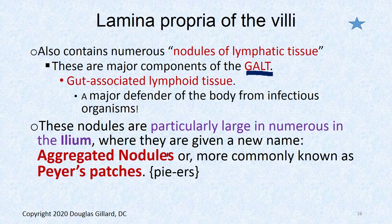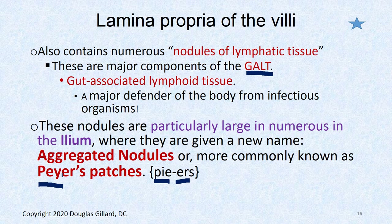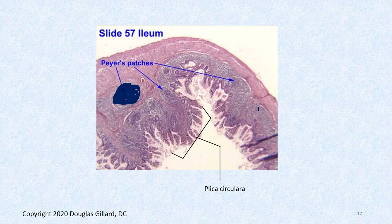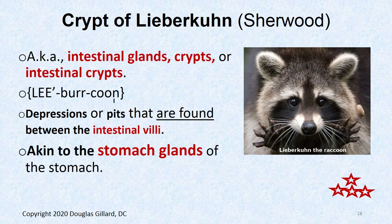In the ileum, the GALT gets so big it gets a different name — Peyer's patches, also called aggregated nodules. They're the same thing, just part of GALT. You can actually see a giant Peyer's patch right here — it's like a death star. If you're a bug, you don't want to mess with that thing. The population gets more dense toward the distal ileum because more bugs can grow there as the acidic environment from the stomach is pretty much gone.